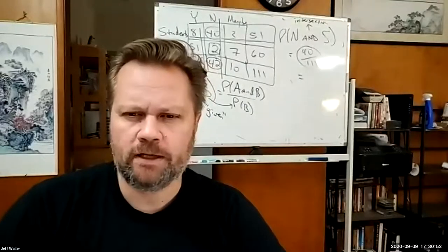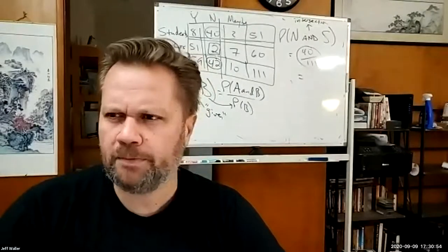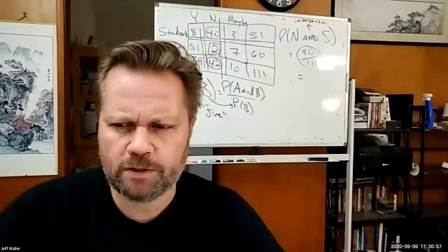A student asks about a problem in section 5.2 asking for the least possible degree of a function. The student explains their approach: the number of turning points plus one gives the degree. However, the function has two turning points suggesting third degree, but also has two vertical asymptotes. The student asks if the asymptotes change the degree determination.